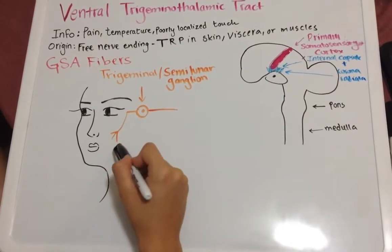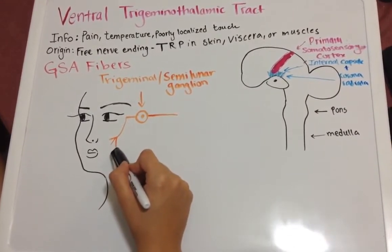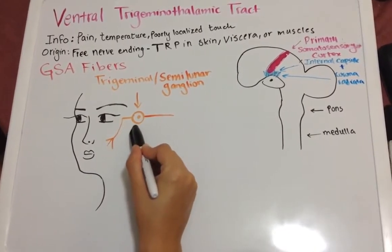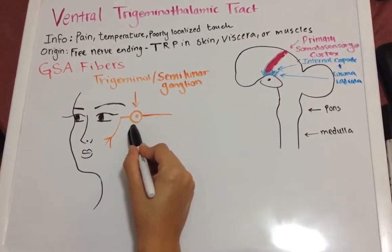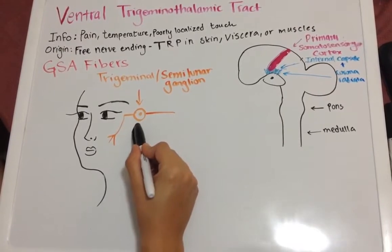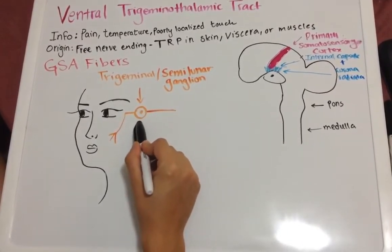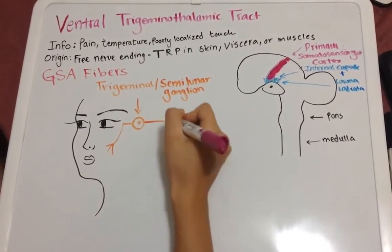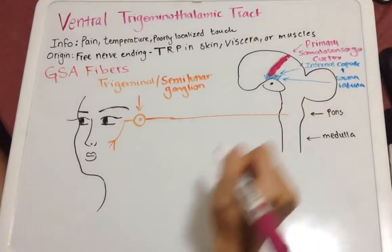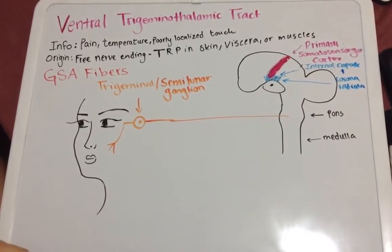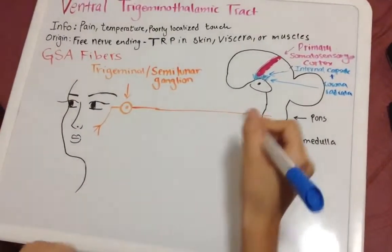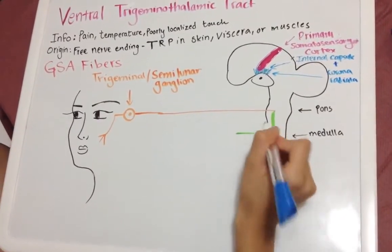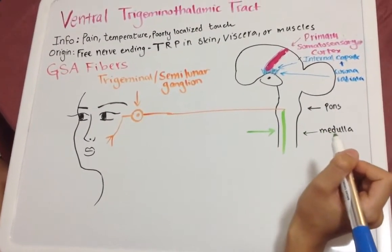So let's say that this person has pain here — the free nerve endings are going to take the information to the trigeminal or semilunar ganglion, where the cell bodies are located. The neurons here are pseudo-unipolar, and the information is going to enter the pons. Once it enters the pons, it's going to descend via a very important tract called the spinal trigeminal tract.